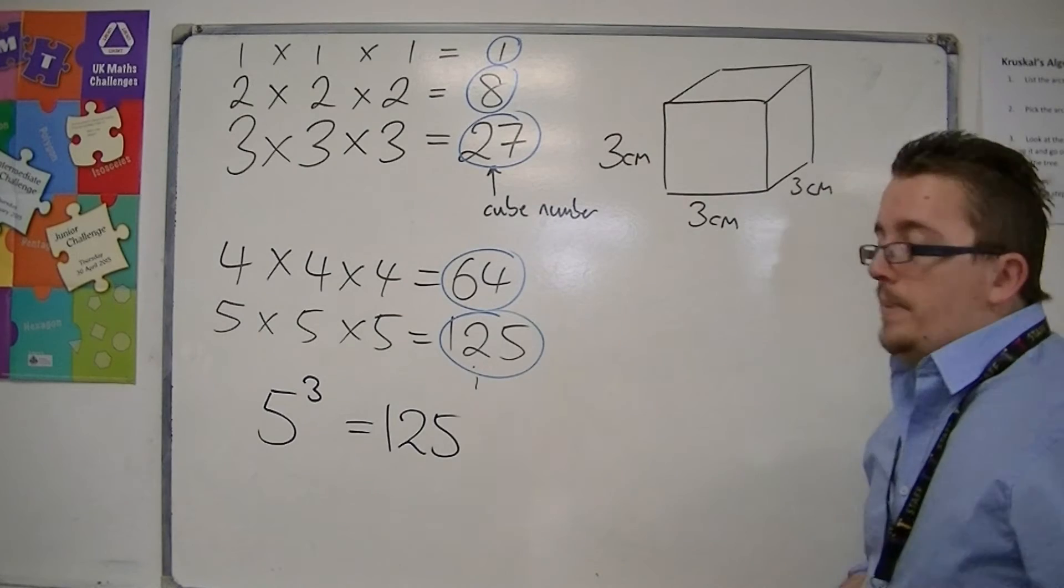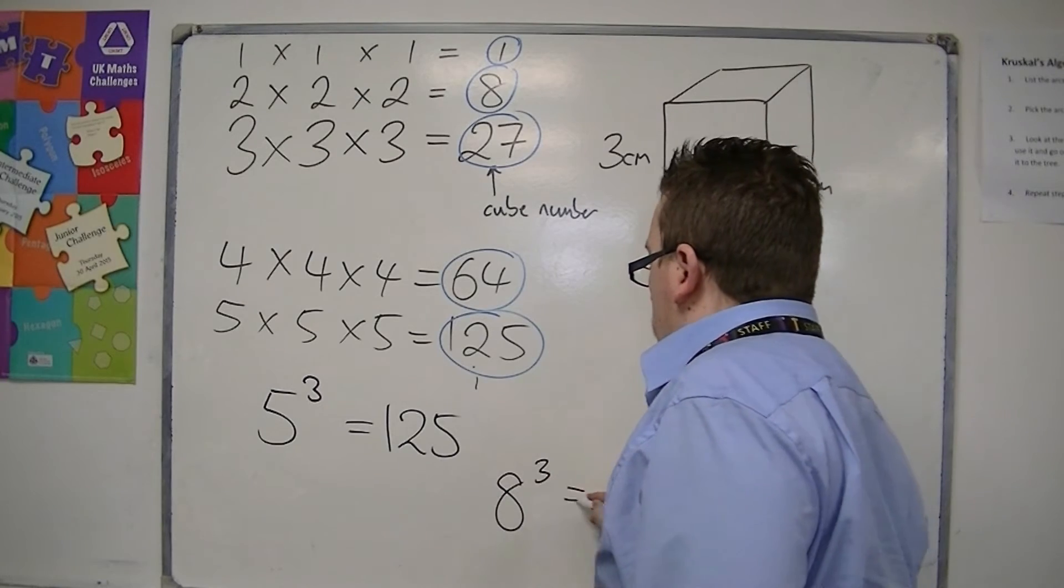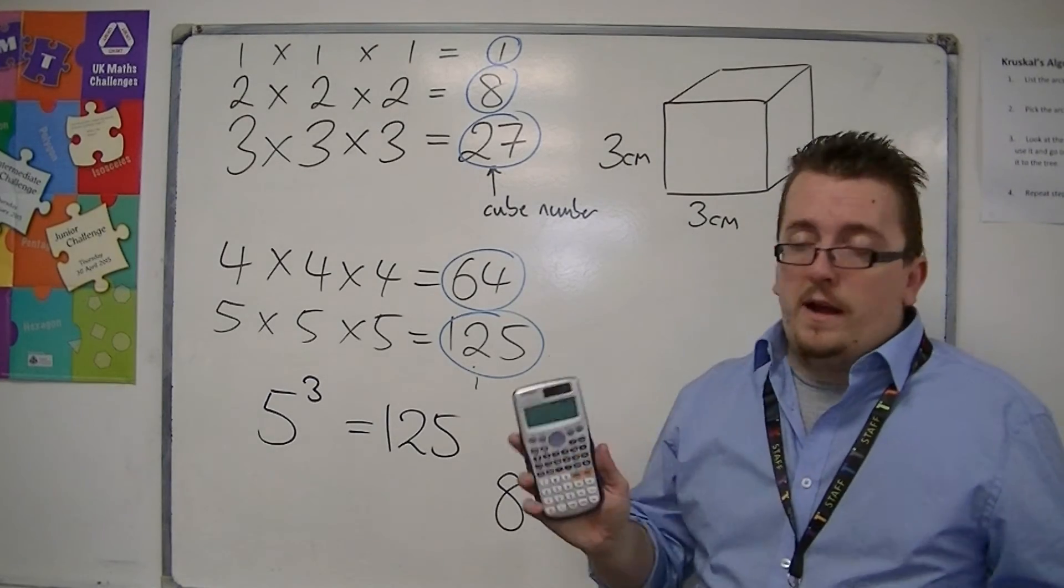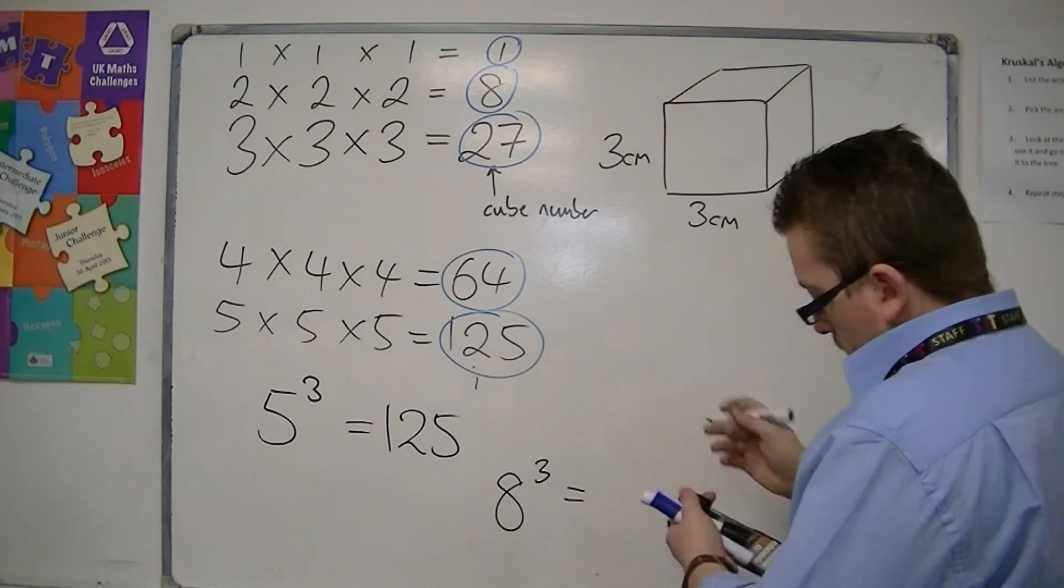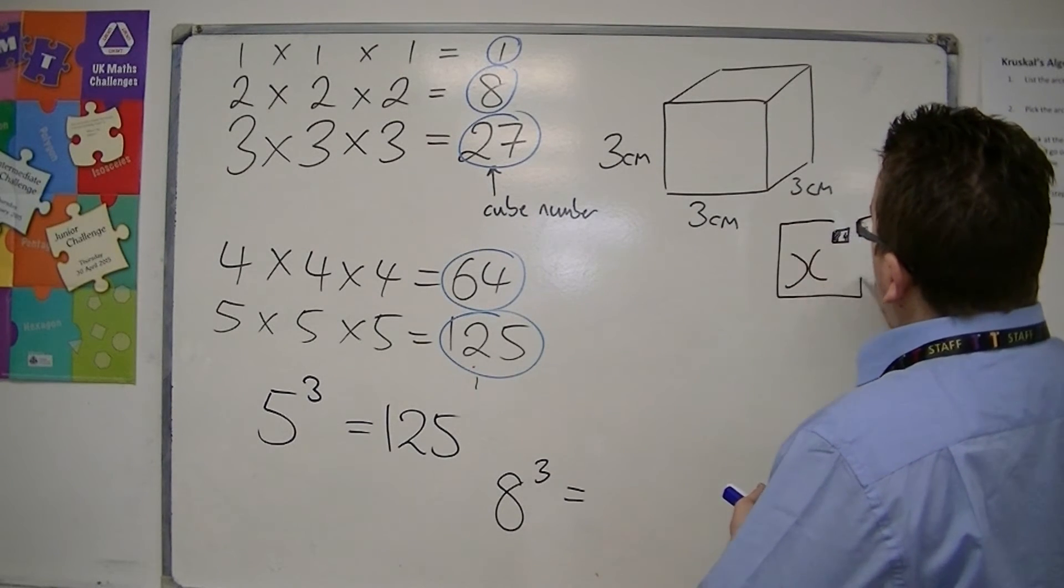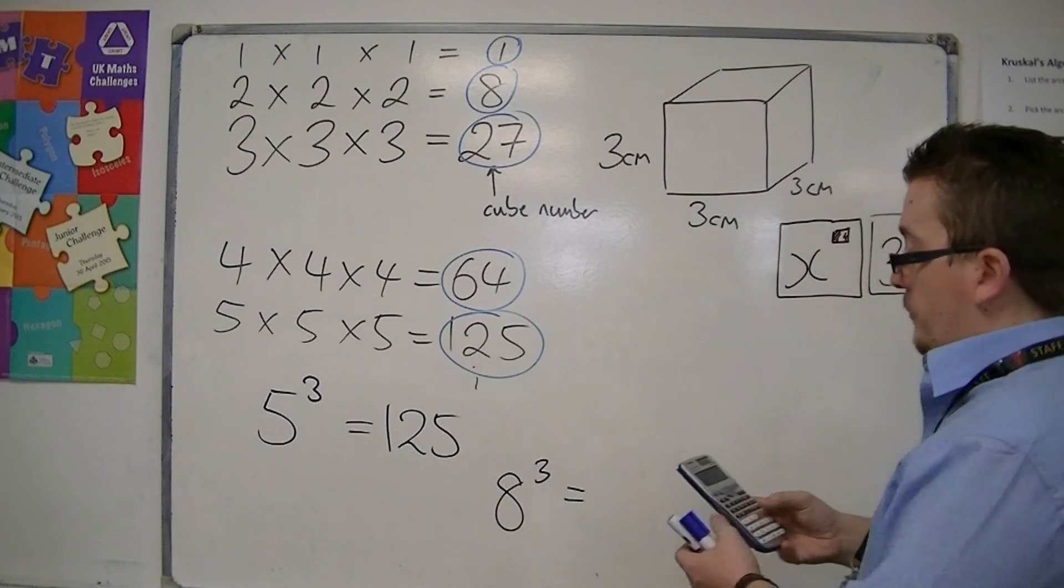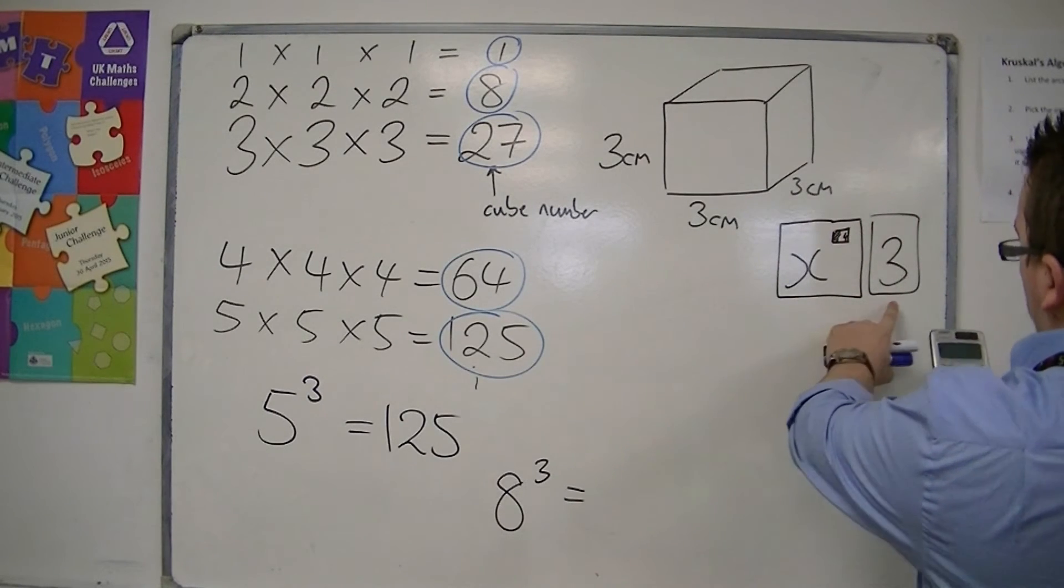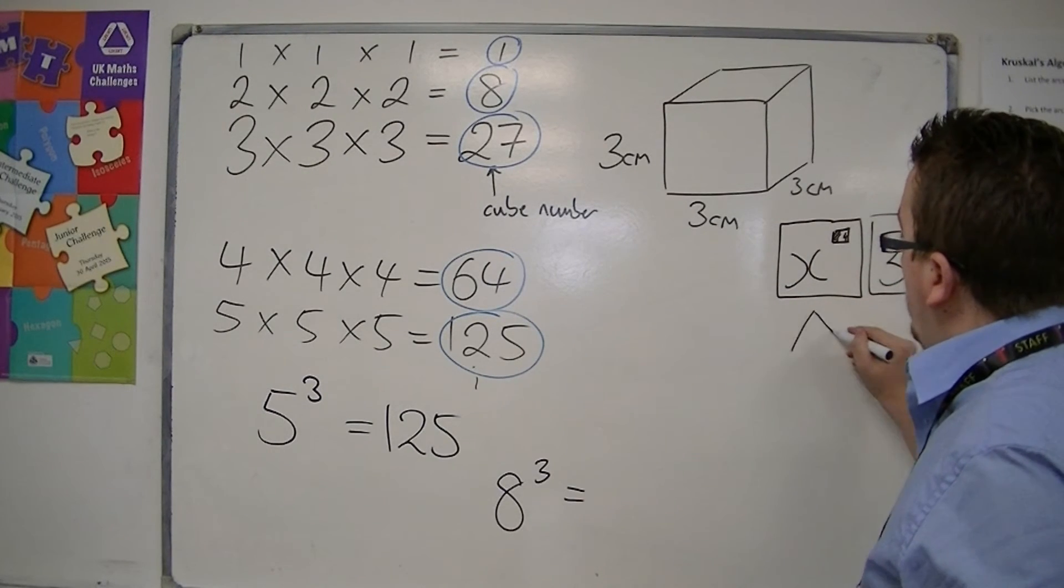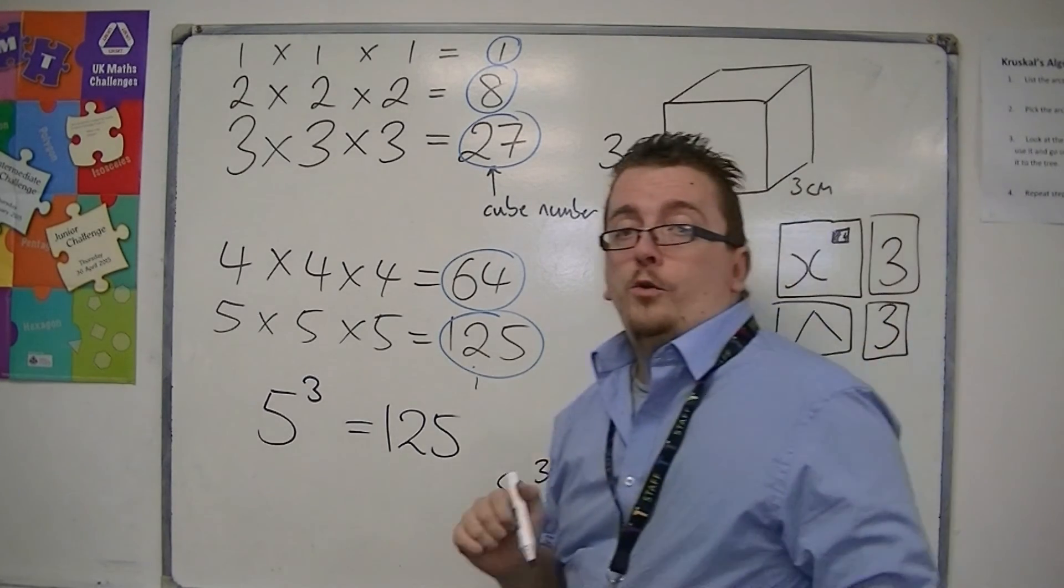You should also be able to work out something like what is 8 cubed using your calculator. Depending on the calculator you have, you may have a button that looks like x to the power of something, and then you would need to press 3 because you want it cubed. So you'd first write 8, then this button, then 3. Or you might not have this button looking like that. It might be like a little hat button, and then the 3, if the calculator is slightly older or of a different design.